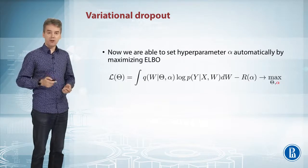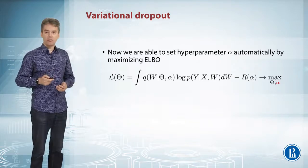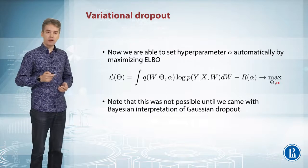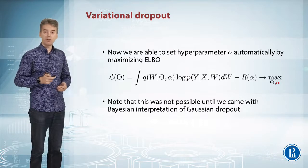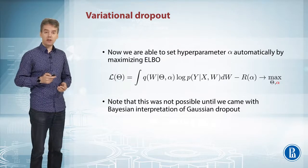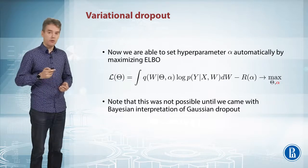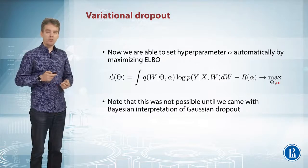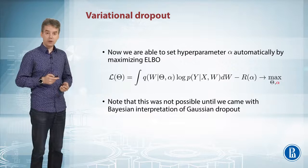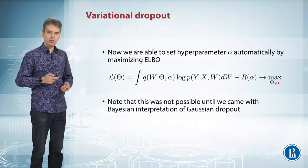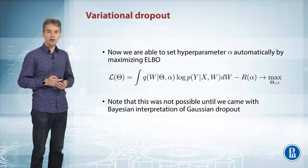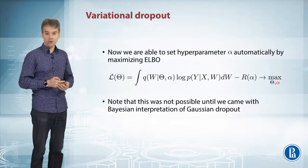So why not optimize the ELBO with respect to θ and α? It is important to know that this wasn't possible until we came up with a Bayesian interpretation of Gaussian dropout. If we tried to optimize just the first term — the data term — with respect to both θ and α, we would quickly end up with zero values of α. Because the maximum of the first term is achieved when our distribution is a delta function at W_ML, and a delta function means zero variance, which means zero α.